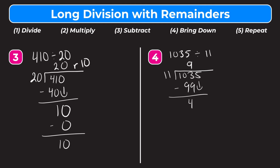Step 4 is bring down — we bring down our 5. Step 5 is repeat: how many whole groups of 11 fit into 45? That's going to be 4. 4 times 11 is 44. Step 3 is subtract: 45 minus 44 is equal to 1. Step 4 would be bring down, but we've gone all the way to the right in our dividend, so there's nothing left to bring down. We are left with a 1, so remainder 1. So 1,035 divided by 11 equals 94 remainder 1.